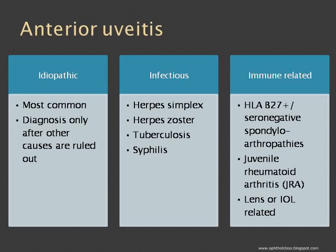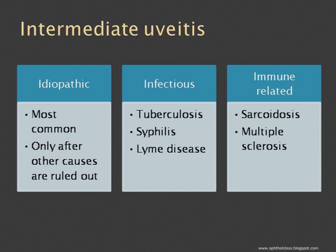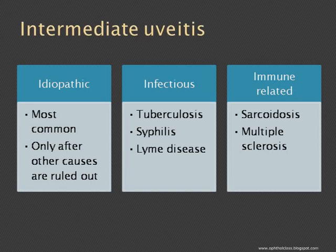For intermediate uveitis, again we have idiopathic, infectious, and immune-related causes. Idiopathic is probably the most common cause — rule out all other causes before labeling the patient as idiopathic. For infectious causes, as in all other types of uveitis, tuberculosis and syphilis must be ruled out. Lyme disease is also one of the common causes for intermediate uveitis, and it can also present as pan uveitis. Among immune-related causes: sarcoidosis and multiple sclerosis. Sarcoidosis can present in any location. Core investigations for every uveitis include workup for tuberculosis, syphilis, and sarcoidosis.